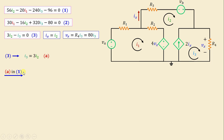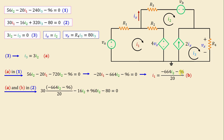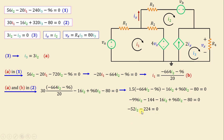Substituting i3 = 3·i2 into Equation 1: 56·i2 − 20·i1 − 720·i2 − 96 = 0, which simplifies to −664·i2 − 96 over 20, giving i1 in terms of i2 (Equation B). Substituting Equations A and B into Equation 2 and simplifying, we obtain: −52·i2 − 224 = 0, so i2 equals −224/52, which equals −4.4 amps.